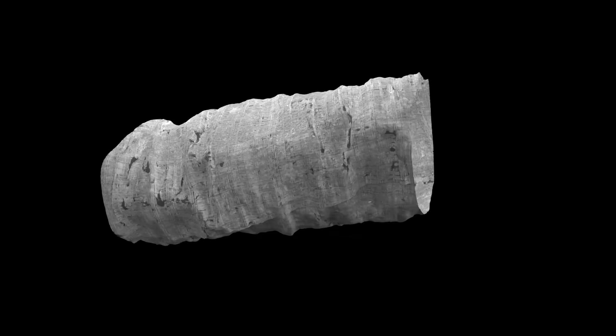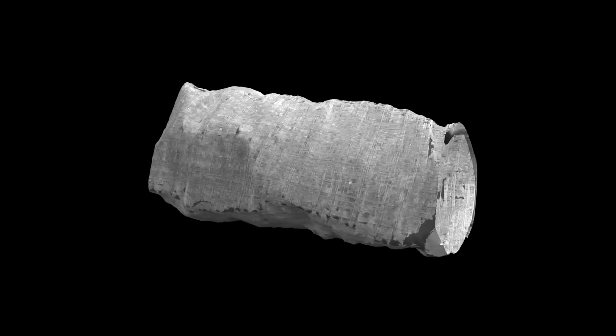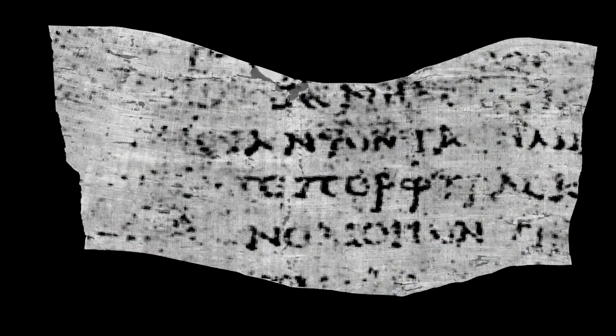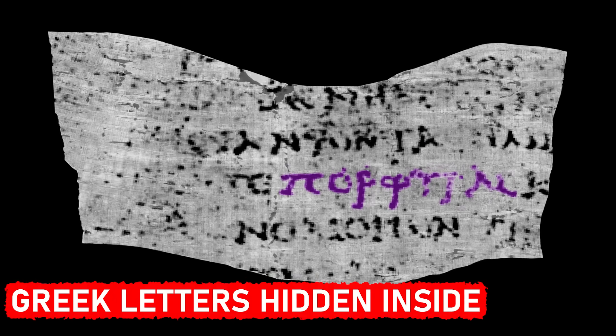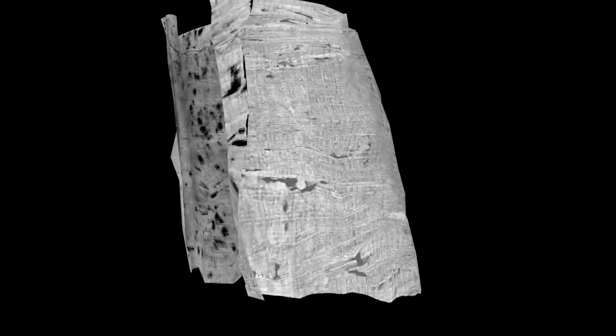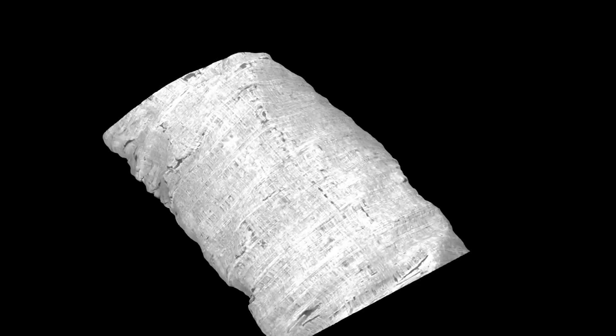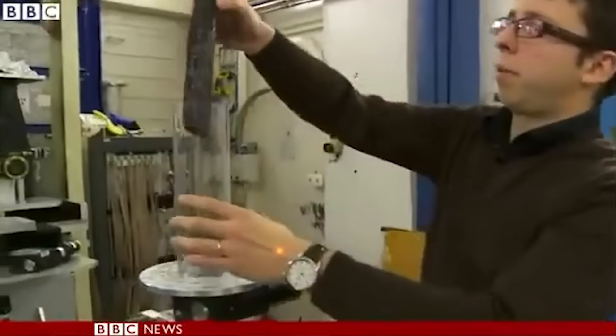Researchers used machine learning models to analyze tiny textures and 3D scans of the scrolls. The AI detected faint differences in the surface that revealed Greek letters hidden inside. The first passages talked about pleasure and philosophy, words no one had seen in ancient times.